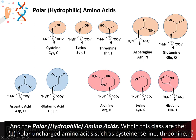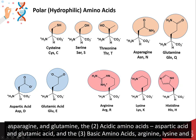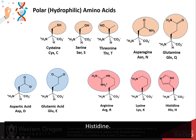And the polar hydrophilic amino acids. Within this class are the polar uncharged amino acids such as cysteine, serine, threonine, asparagine, and glutamine. The acidic amino acids, aspartic acid and glutamic acid. And the basic amino acids, arginine, lysine, and histidine.